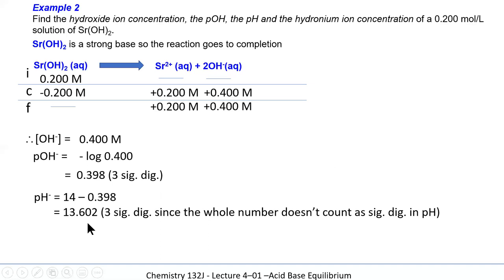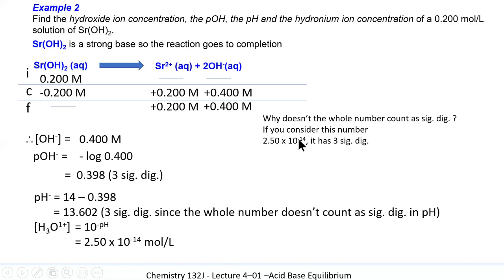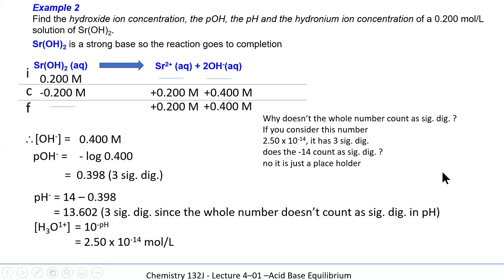An important note: the whole number part of a pH unit does not count as a significant digit — only the decimal places count. That's because it's a logarithmic scale. For example, a number like 2.50×10⁻¹⁴ has three significant digits; the −14 is a placeholder, not a significant digit. The same applies to pH and pOH: the whole number portion is a placeholder, and only the decimal places are significant.